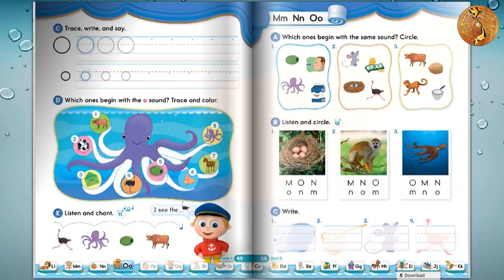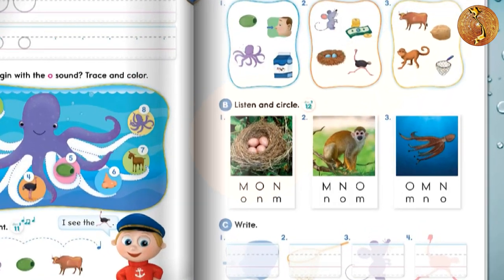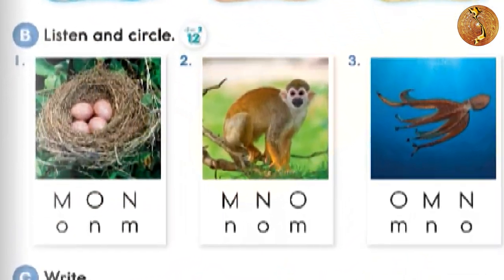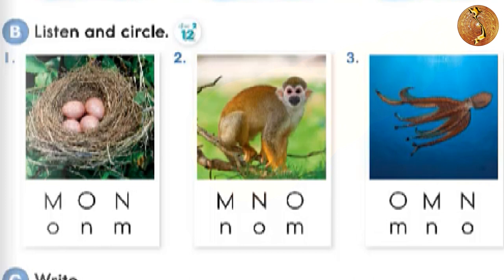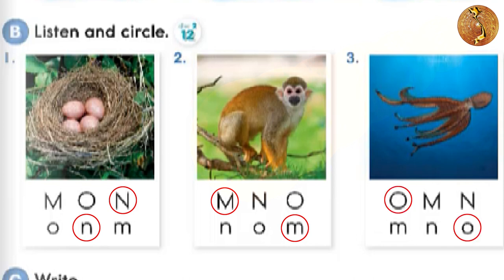Page 50. The letters M, N, O. B: Listen and circle. 1. Nest, nest. 2. Monkey, monkey. 3. Octopus, octopus.